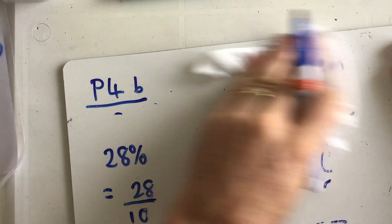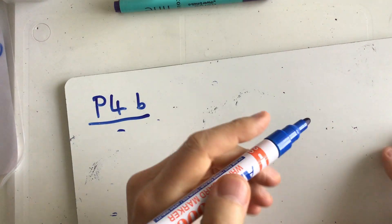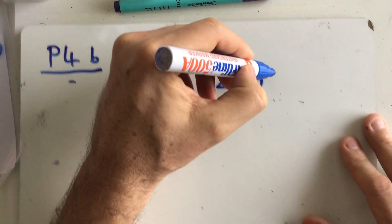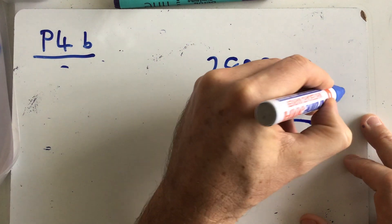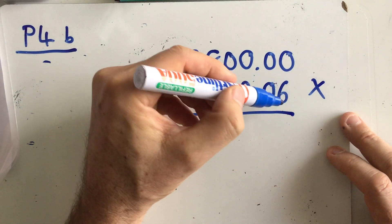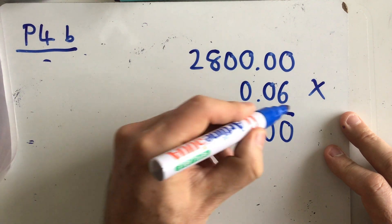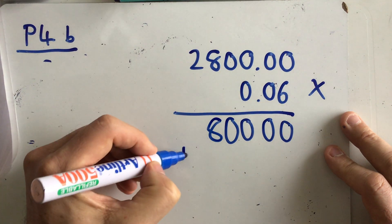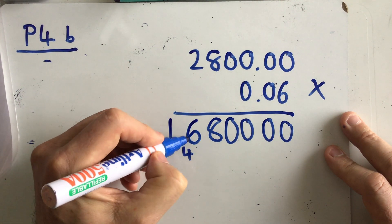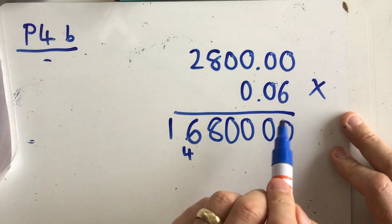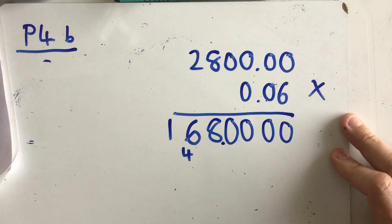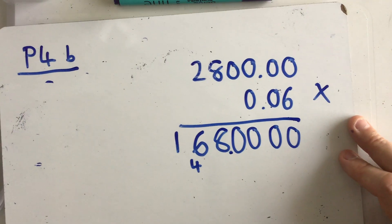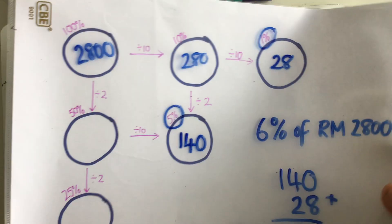Now I could have solved that using the multiplication method I used before, by doing 6% of 2,800. But I think the bubble method is easier on this one. Let's just verify: 6 times 0 is 0, 6 times 0 is 0, 6 times 8 is 48, 6 times 2 is 12 and 4 is 16. Then how many places to the right of the decimal point have I got? 1, 2, 3, 4 — so I move my decimal point 4 places, giving me an answer of 168, which is the same answer I had before. I think on this question the bubble method is an easier one to use.